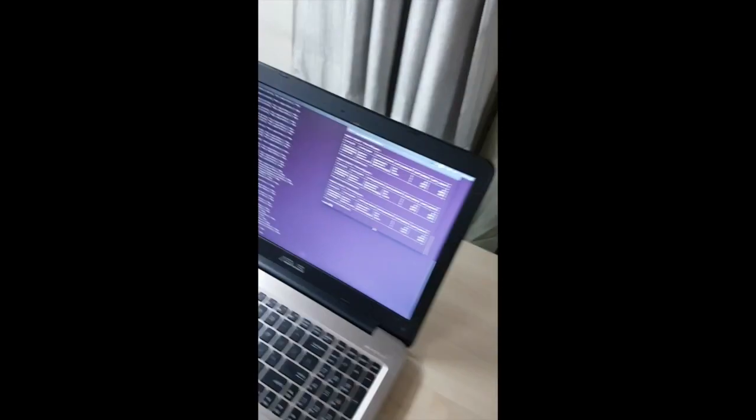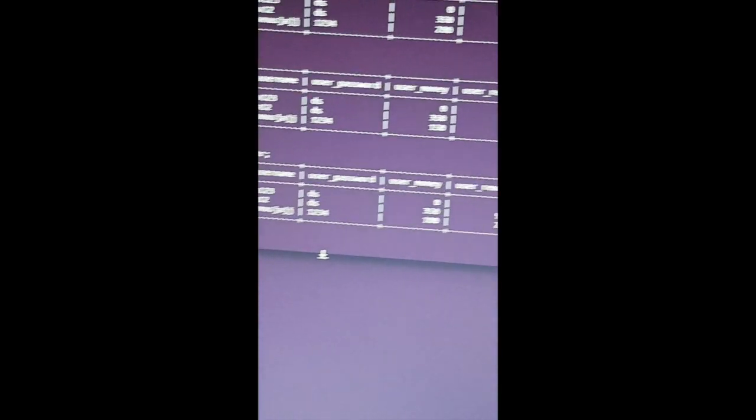Feature 2, the dustbin when full follows the line, goes to the dumping point and then dumps the waste and comes back.